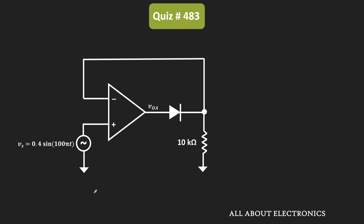If you see this circuit, it is basically a half wave precision rectifier. In the precision rectifier, whenever the input is positive, the voltage over here is same as the input signal. And whenever this input is negative, then the output at this node will be equal to 0. So in this way, in the output only the positive half cycle will appear.